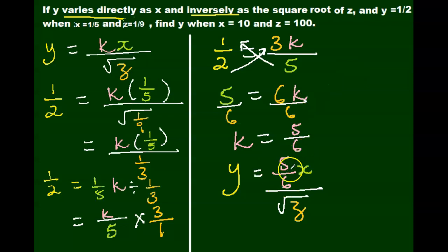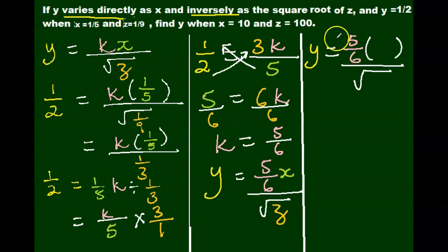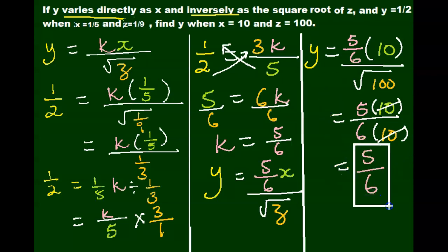Then we can plug our k equals 5 over 6 into our original equation that we set up. So we can say that y equals 5 over 6x over square root z. Now we want to find our y when x equals 10 and z equals 100. My x is 10 and my z is 100. I can put my 5 over 6 in the numerator to the denominator. Square root of 100 is 10. So in this case, the 10s actually cancel each other out. And I'm left with y equals 5 over 6 when x equals 10 and z equals 100. Now this is a rare instance, so it just happened that our y when given those values happens to be the same value as our k.